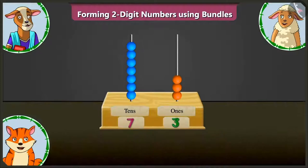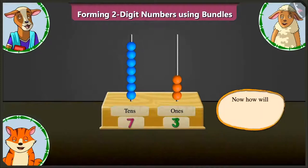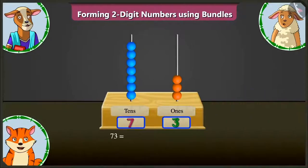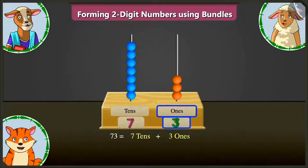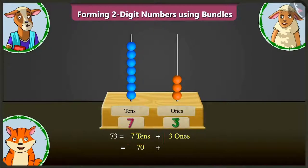Absolutely correct. Now, how will you expand 73 into two parts? 73 means seven tens and three ones, meaning its two parts will be 70 and 3.